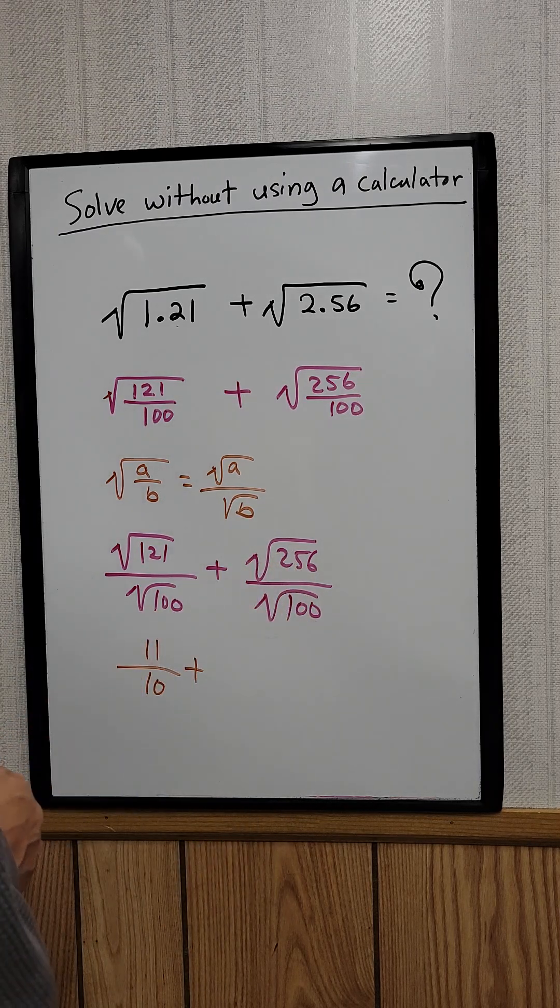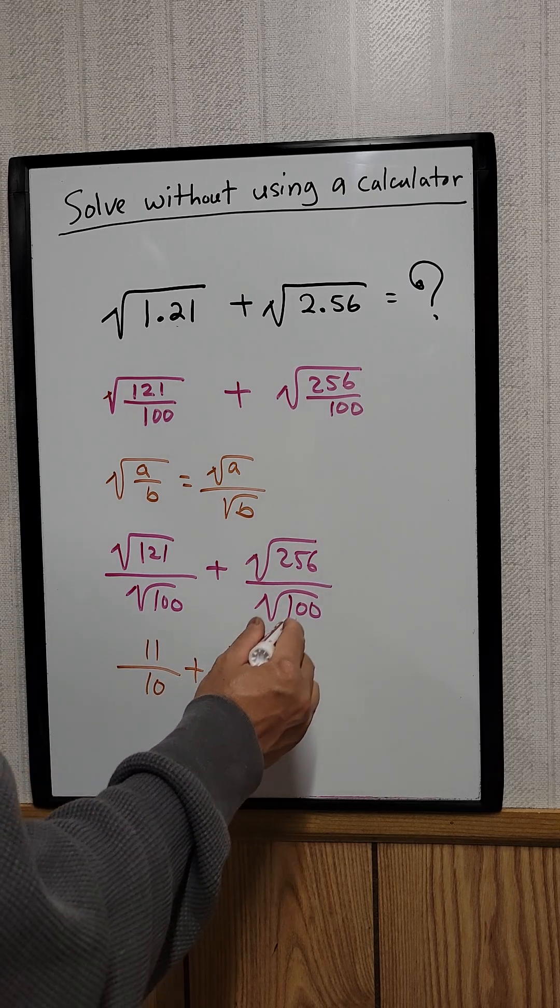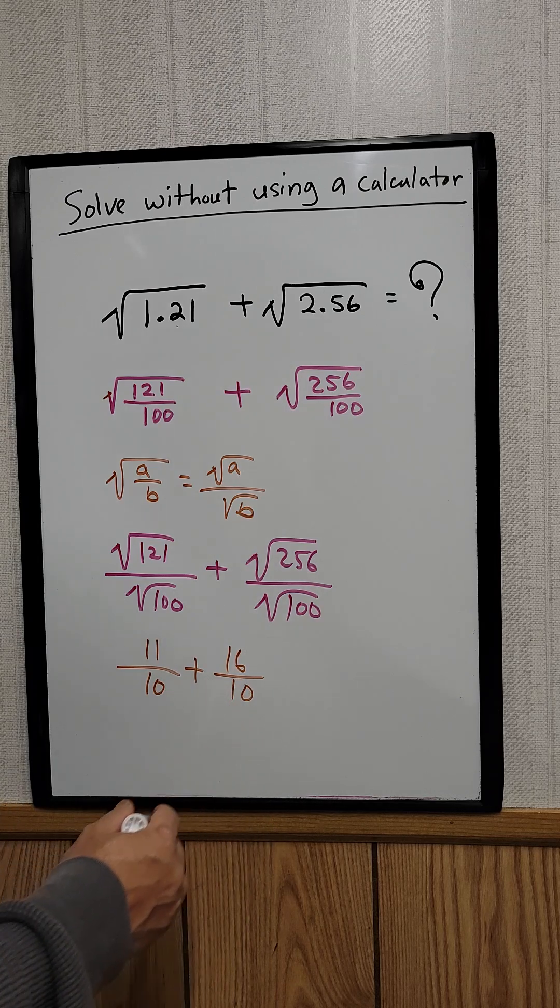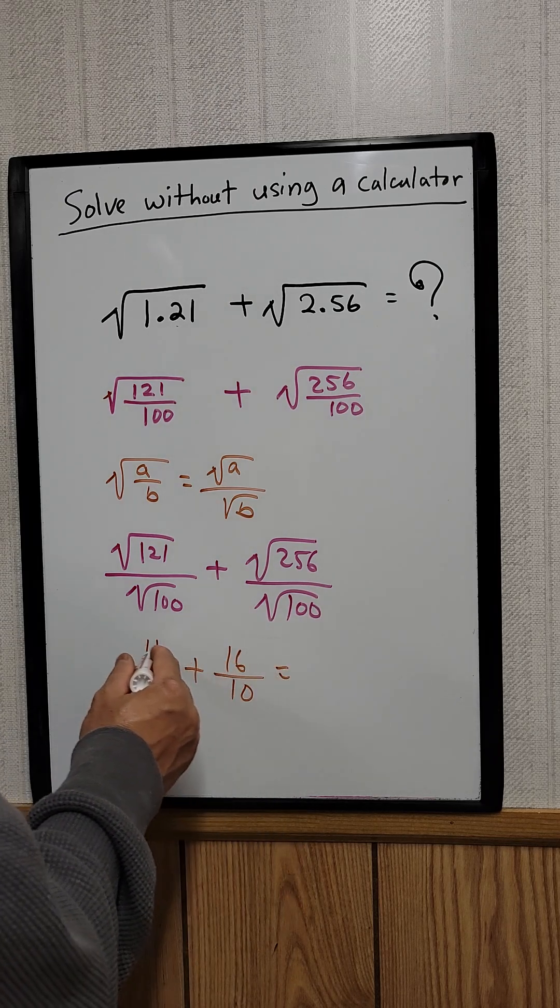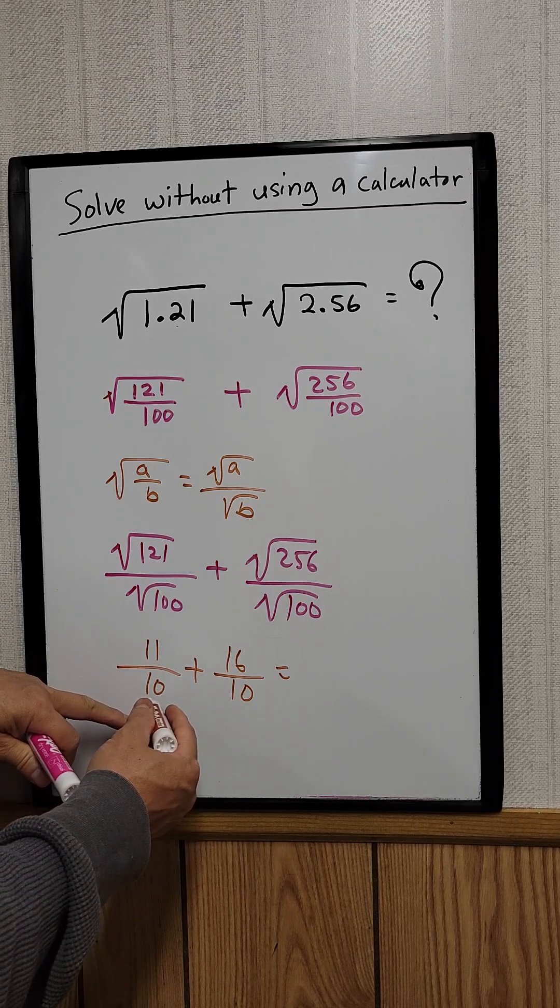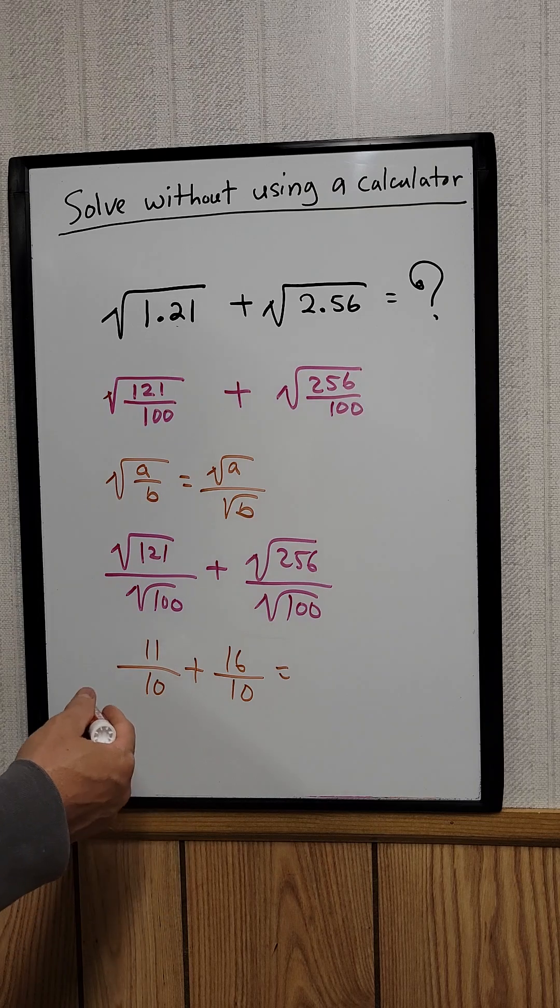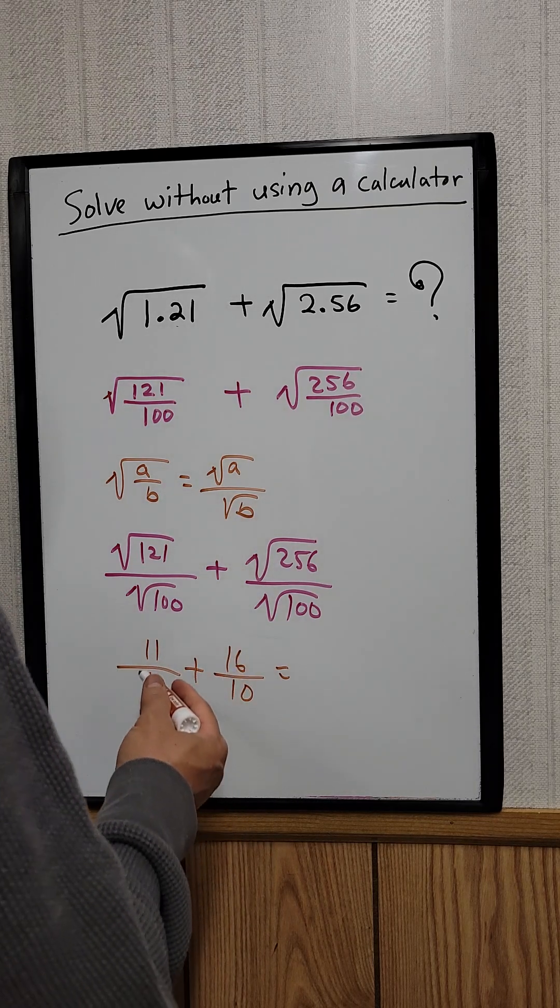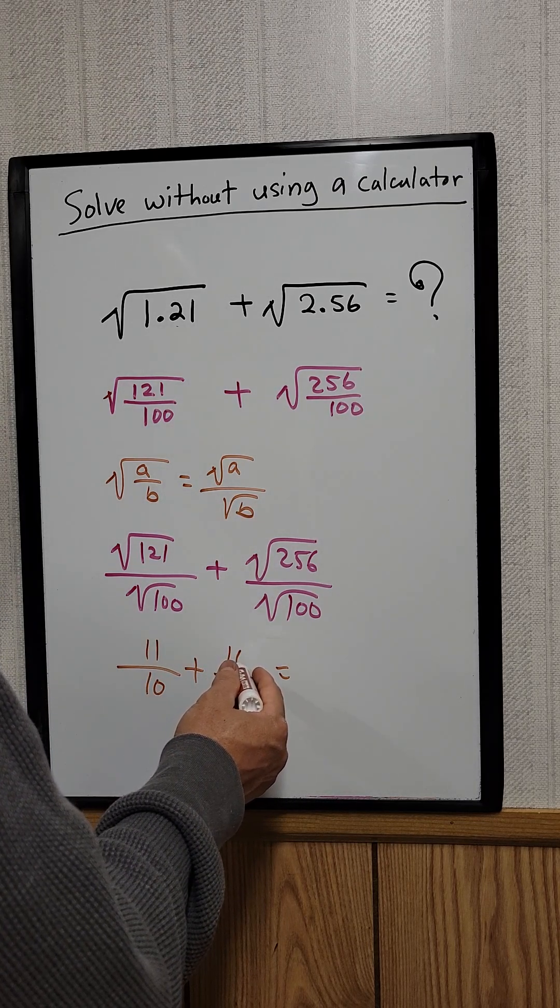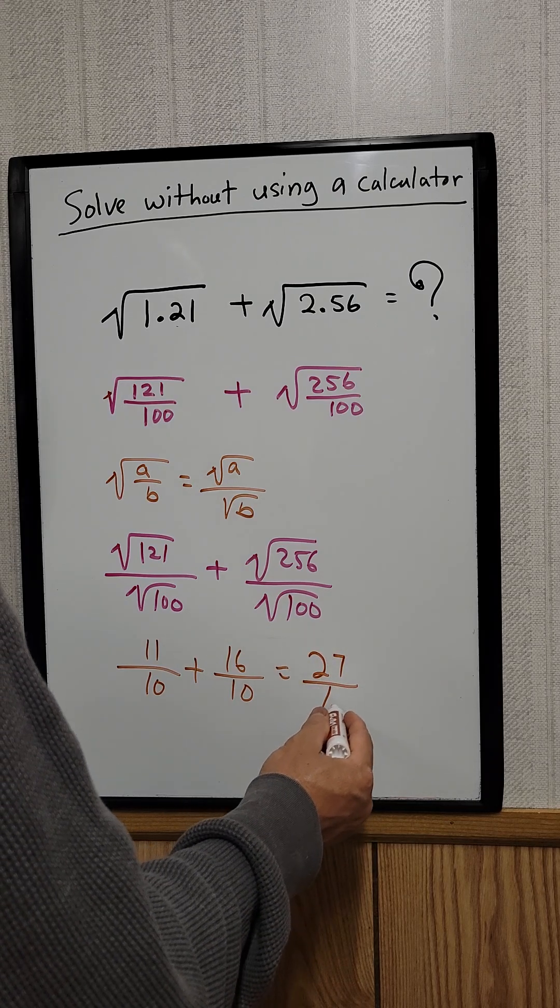What is the square root of 256? That would be just 16. And then the square root of 100 would be just 10. Now we can add this up. 11 plus 16. Because the denominators have the same denominator, we can add the numerators. So 11 plus 16 will be 27 divided by 10.